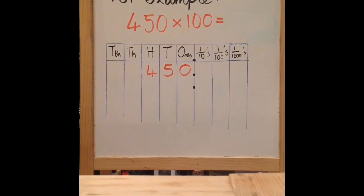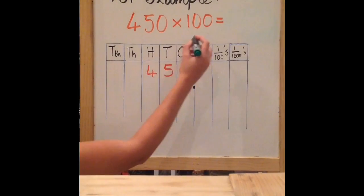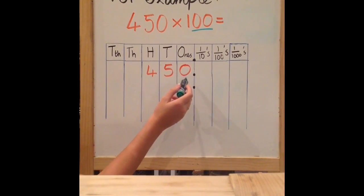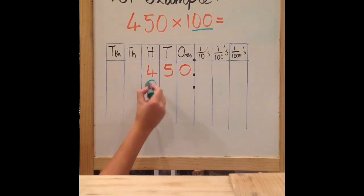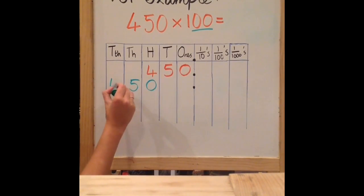With the calculation 450 multiplied by 100, again put your digits in the correct place value columns. You're multiplying, so the number is getting bigger — therefore your digits are moving to the left. 100 has two zeros, so each digit must move two places to the left. Your 0 moves two places to your 100's column, your 5 moves into your 1000's column, and your 4 moves into your 10's of 1000's column.